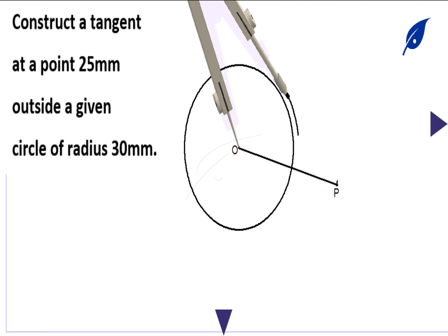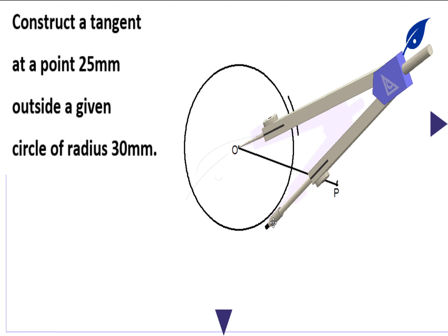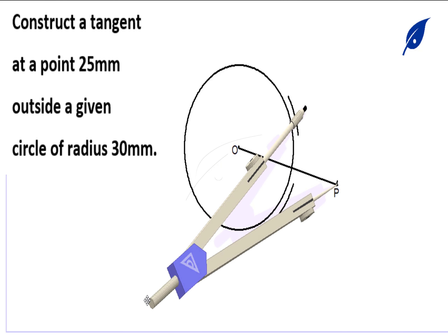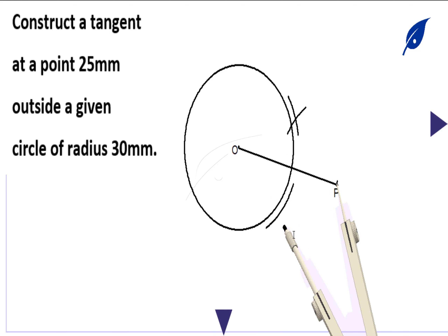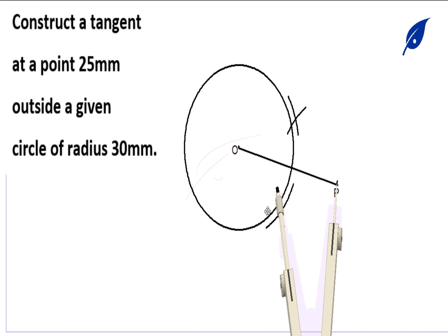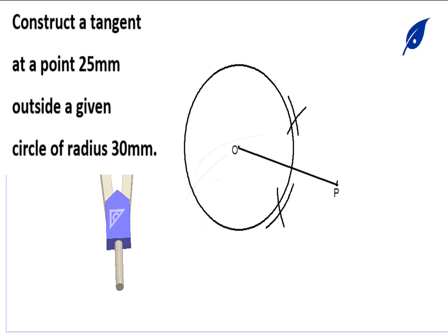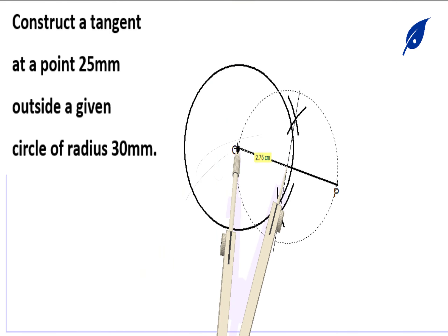To bisect the line OP, get a suitable radius and describe an arc on the upper side, then describe an arc on the lower side. With the same radius, move the compass to point P and describe an arc there, then also describe the lower part. Now connect the intersection points to get the midpoint of the line OP.